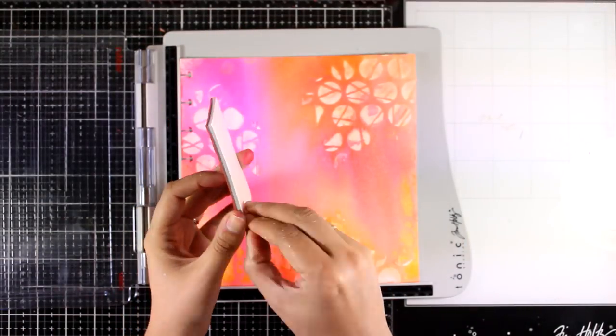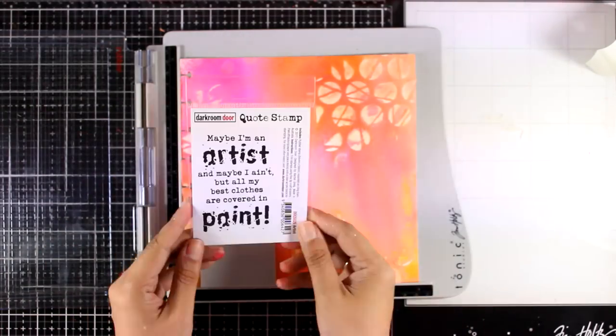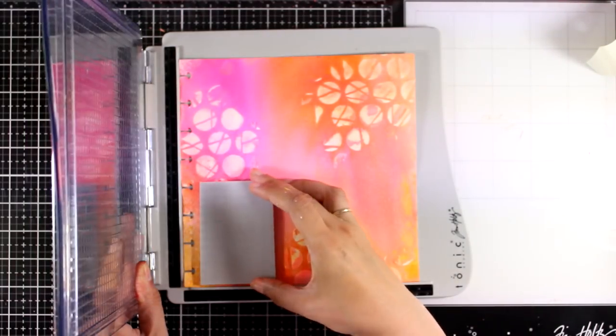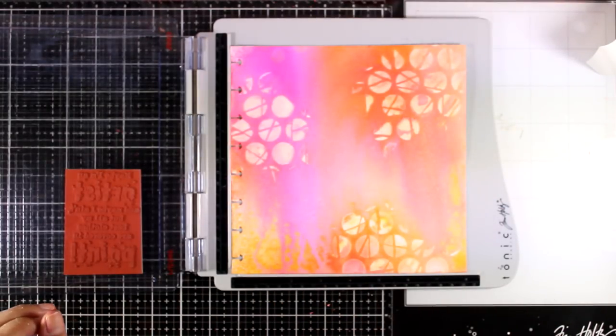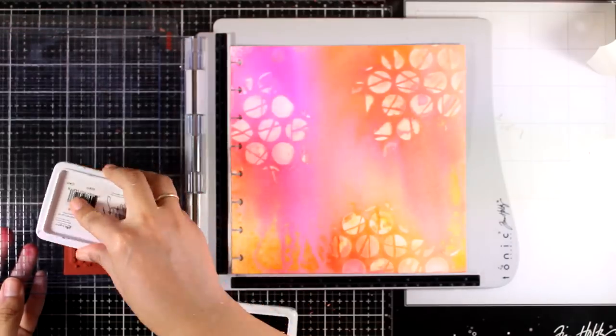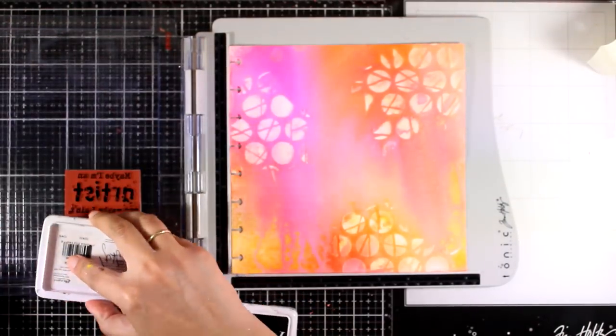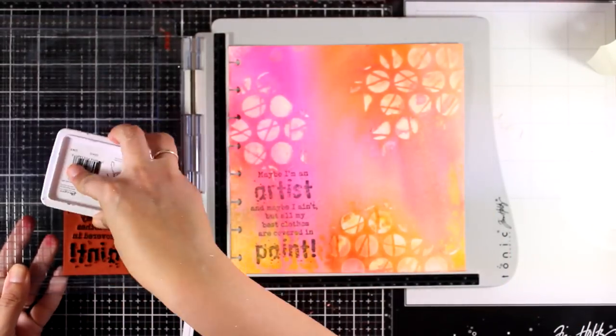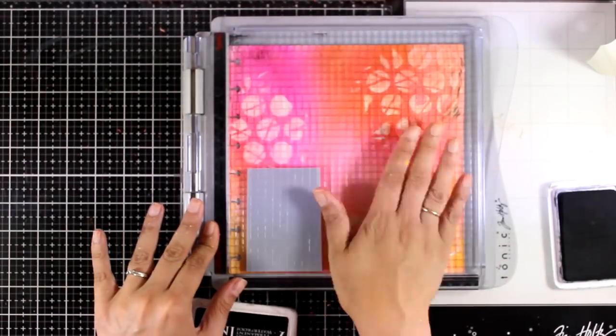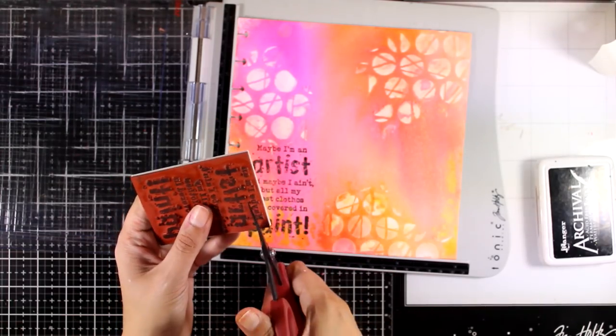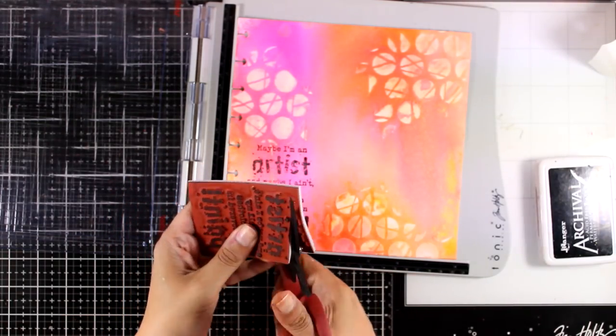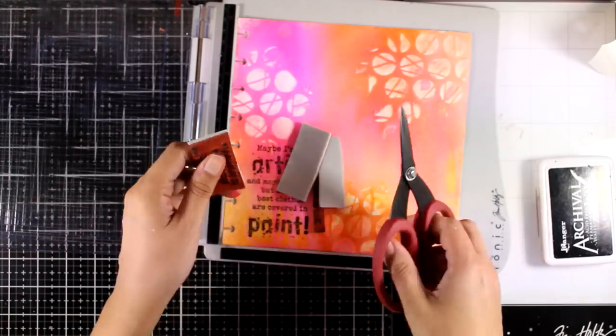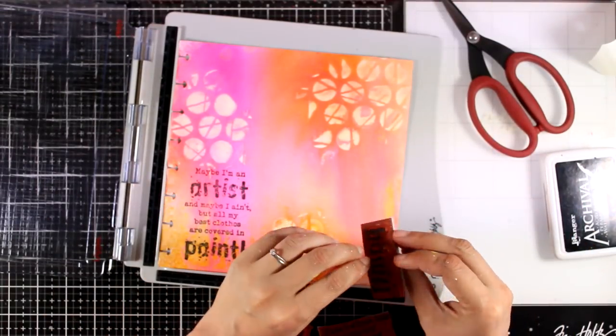Now I'm going to do some stamping and I usually end up stamping my quote at the end, but this time I'm going to do it in the beginning. So I'm using a Darkroom Door quote stamp and this is the artist one that says 'Maybe I'm an artist and maybe I ain't, but all my best clothes are covered in paint.' And I absolutely love this and I find that Darkroom Door does have quite a few of those fun quote stamps which I am going to make sure to link you down below. So anyway, I'm making sure that I have a nice and crisp image because this is watercolor paper so I had to stamp a couple of times. Now I am just cutting out all the parts so that I can separate the words. I can always put them back together if I want to.